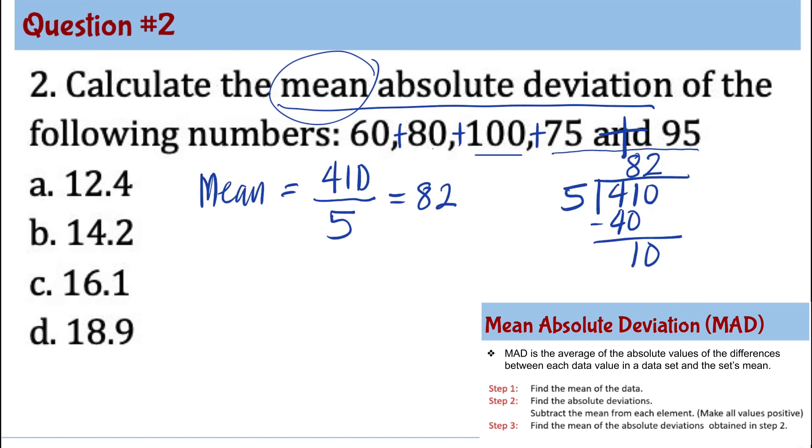Step number 2 is to calculate for the absolute deviation. And to do that, we need to subtract the mean from each of the data. So we have 60, 80, 100, 75, and 95. We need to subtract 82 from each of these to get the deviation. And then we need to get the absolute value of those answers. So 60 minus 82 is equal to negative 22. Absolute value is 22. 80 minus 82, negative 2. Absolute value is 2. 100 minus 82 is 18. Absolute value will always be positive. Because it's the distance of a number from 0. 75 minus 82 is negative 7. Absolute value is 7. 95 minus 82 is 13.